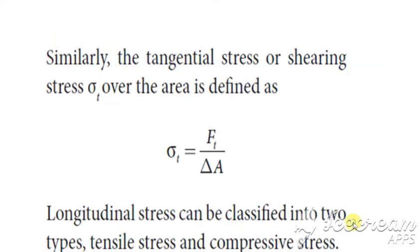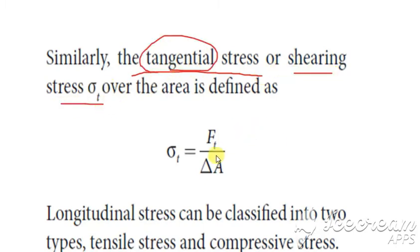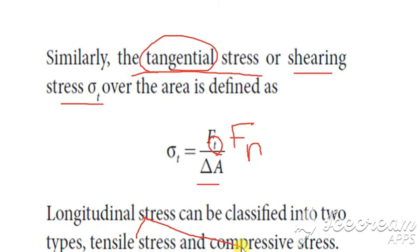For tangential stress, also called shearing stress, the formula is σ = Ft divided by ΔA, where Ft is the tangential force. Longitudinal stress is further split into two types: tensile stress and compressive stress.